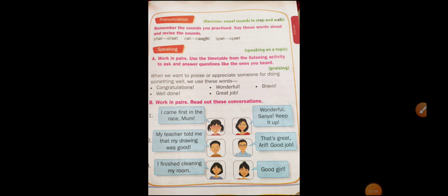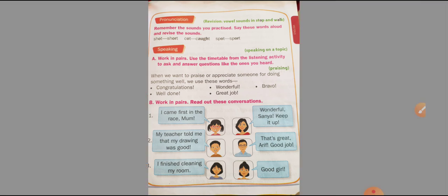Come to page number 39. In previous classes we learned about vowels, short vowels, and long vowels. There are totally five vowels in English: A, E, I, O, U, and 21 consonants. Short vowels are short sounding and long vowels are long sounding.